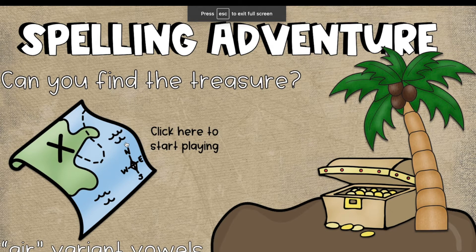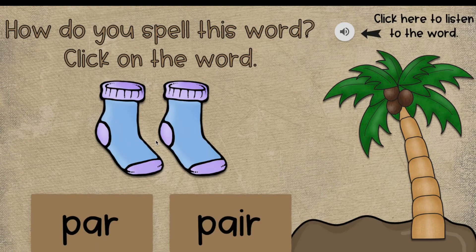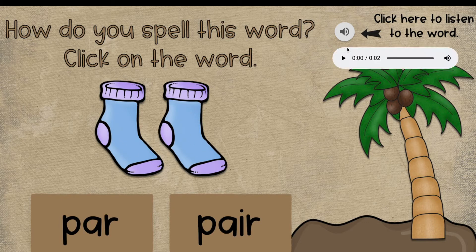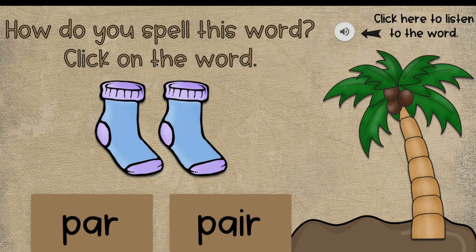The title slide will show the skill you're working on, and they click on the map to begin. They'll see a picture with that spelling skill, and if they're unsure of the word, there's also audio support. They'll see two choices: one is the correct spelling of the word and the other is incorrect. We've made sure to make the incorrect word similar enough to the correct word so your students will really need to focus on the two choices.